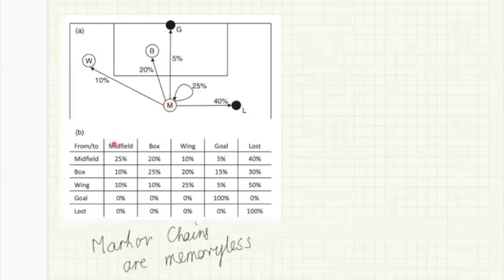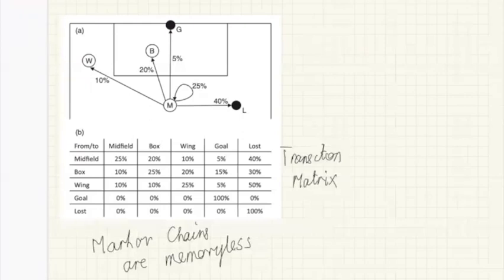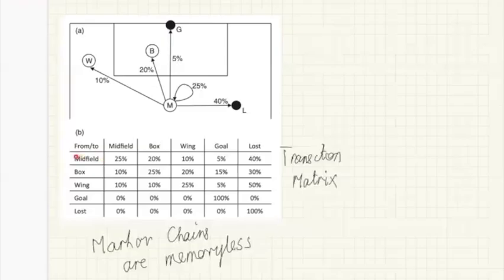This array here is known as the transition matrix, and it tells us the probability that if we're in midfield, the ball stays in midfield on the next pass, that we pass from midfield to the box, from midfield to the wing, or we score a goal directly from midfield. Or we can also lose the ball and it's turned over to the opposition.